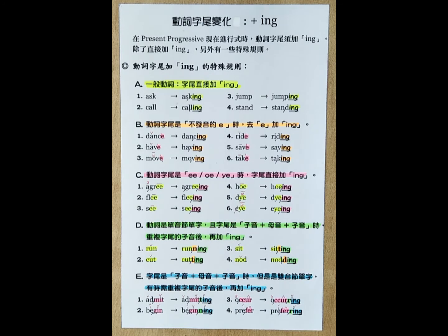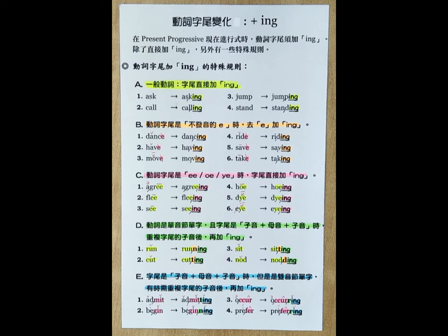D: You need to meet two conditions in order to double the last consonant before adding I-N-G. Condition number one: the ending must be consonant, vowel, consonant. Condition number two: the verb must be one syllable. Remember, a syllable is the number of vowels you hear, so for one syllable, you will hear one vowel.